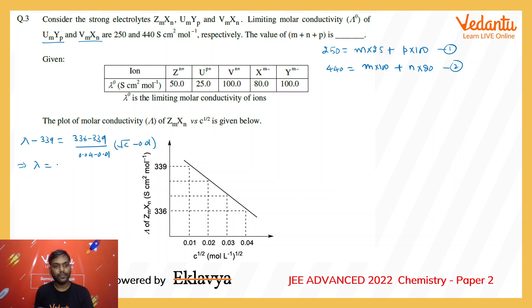Now, as we know that this is λ = λ∞ - B√C, this represents the limiting molar conductance of Z_M X_N. So λ₀ of Z_M X_N would be 340, which was not given directly but we calculated from the graph.